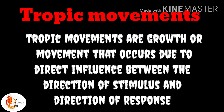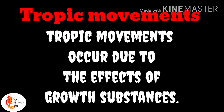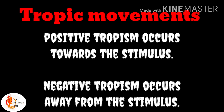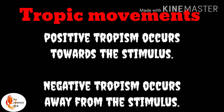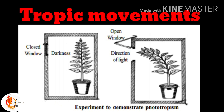Tropic movements are growth or movements that occur due to a direct influence between the direction of stimulus and the direction of response. Tropic movements occur due to the effect of growth substances. These tropic movements can occur towards or away from the stimulus. If it occurs towards the stimulus, it is known as positive tropism; if it is away from the stimulus, it is known as negative tropism.